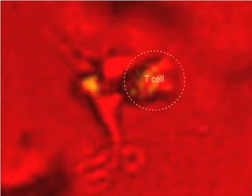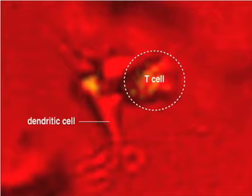In this video, we can see a T cell that becomes activated when it interacts with a dendritic cell. The T cell is labeled with a dye that fluoresces when it binds calcium ions. At the moment, the T cell is not activated. Its intracellular calcium concentrations are low, and so little green fluorescence is visible.